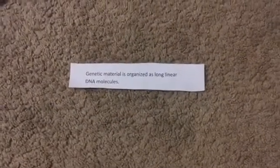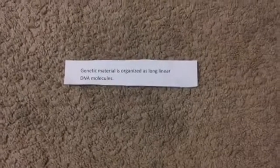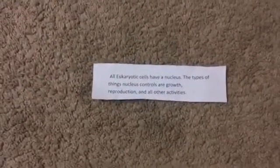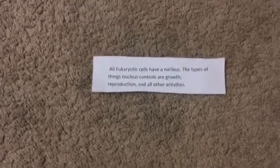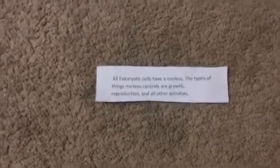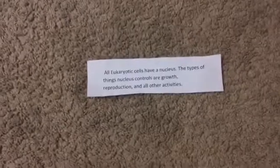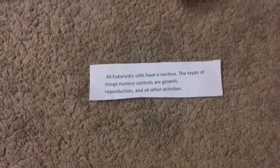Genetic material is organized as long linear DNA molecules. All eukaryotic cells have a nucleus. The types of things a nucleus controls are growth, reproduction, and all sorts of other functions.